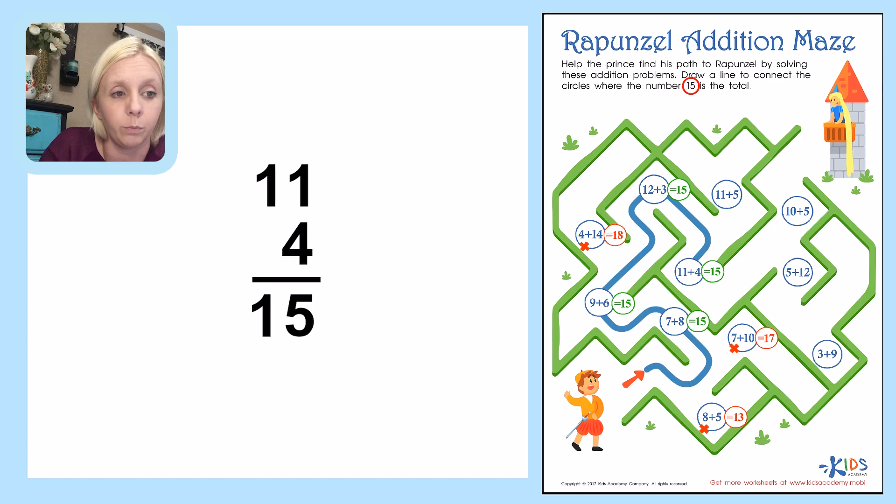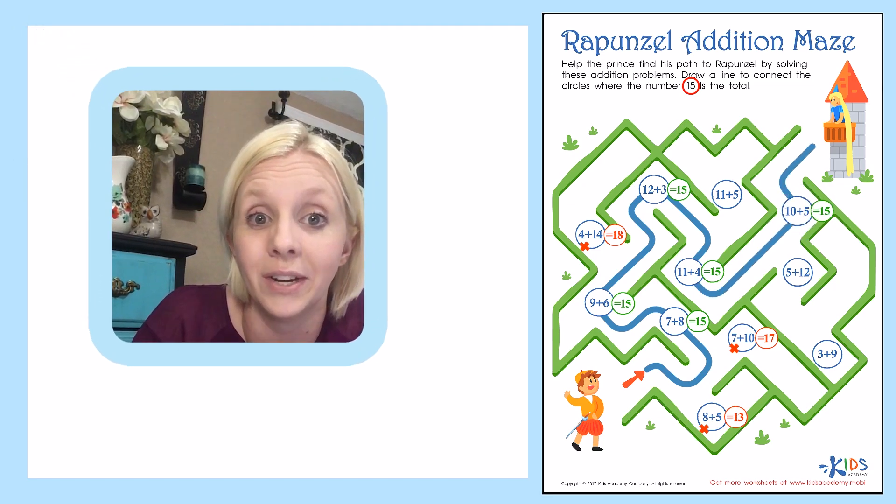I'm either going to go to 5 plus 12 or 10 plus 5. And actually I already know that 10 plus 5 is 15 because whenever you count by 5s, you know that that's 15. But let's go ahead and write it off to the side and just make sure. I've got 10 plus 5. So I'm going to write that out as an equation. 5 plus 0 is 5. Bring down the 1, and we have 15. So that looks like that's the end of our maze and we've gotten over here to Rapunzel.